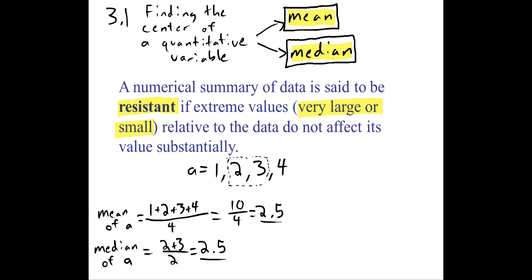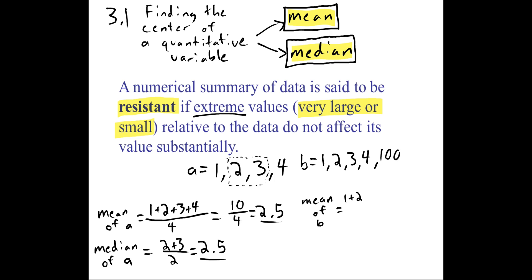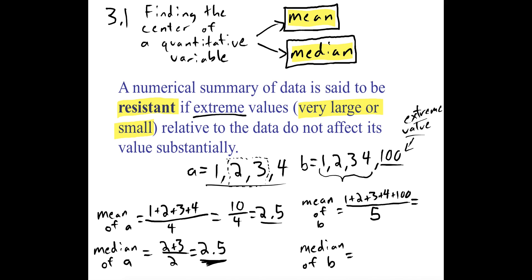Now let's see what happens if we create data set B, which is going to be exactly the same but instead of just those four values, we're going to add a very large — comically large — value of 100. This data set has five values: four that are fairly similar and one extreme value. Let's find the mean of data set B. We add up these numbers including the 100, which gives us 110 divided by 5, which ends up being 22.